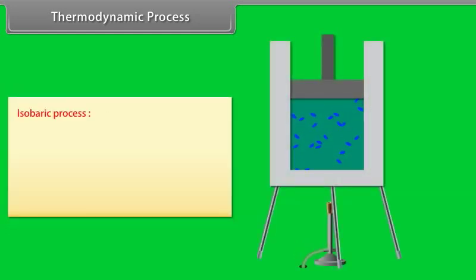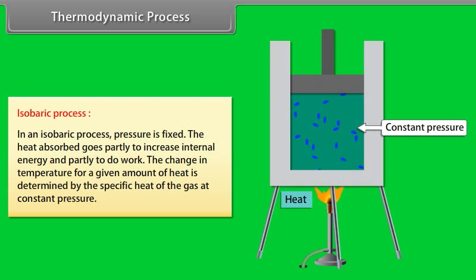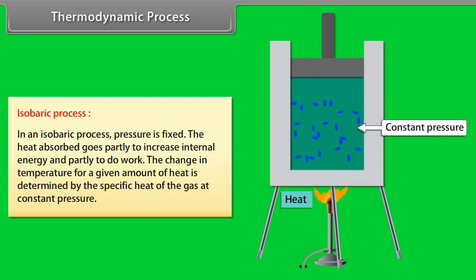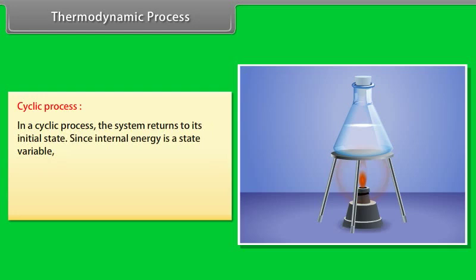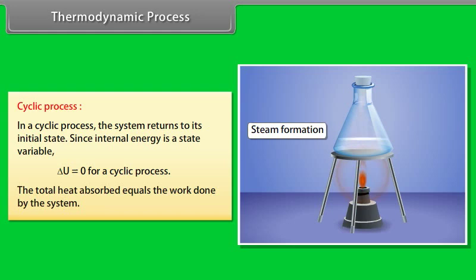Isobaric process: pressure is fixed. The heat absorbed goes partly to increase internal energy and partly to do work. The change in temperature for a given amount of heat is determined by the specific heat at constant pressure. Cyclic process: the system returns to its initial state; since internal energy is a state variable, delta U = 0 for a cyclic process. The total heat absorbed equals the work done by the system.